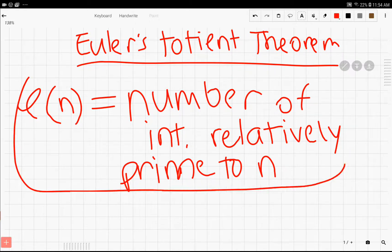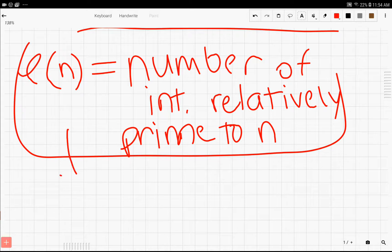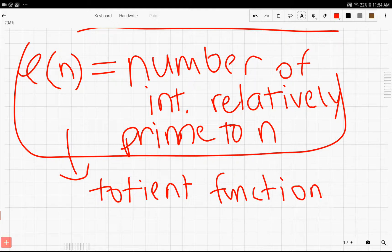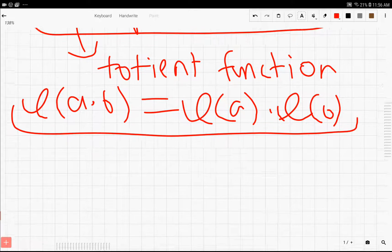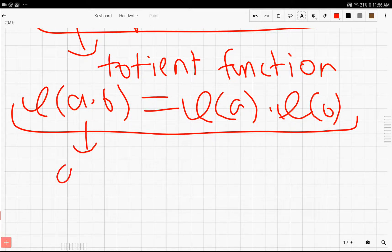So here we have Euler's Totient Theorem. Now this isn't the Totient Theorem itself, this is the Totient function. What it does is find the number of integers relatively prime to n. The function itself is multiplicative, meaning that the statement I just drew out here is true.